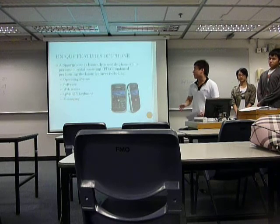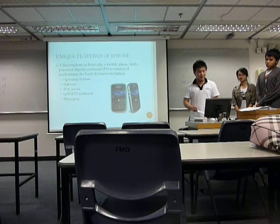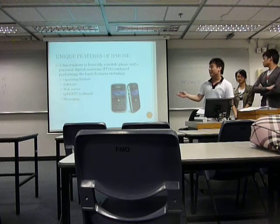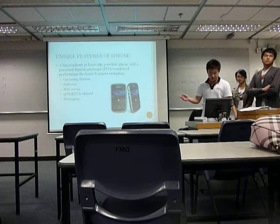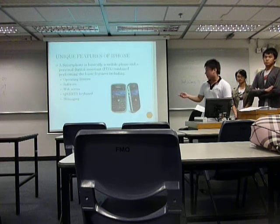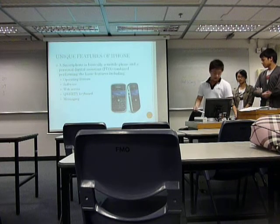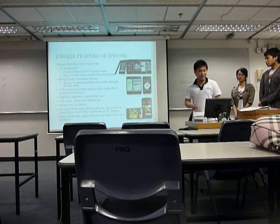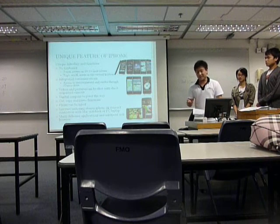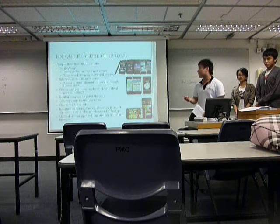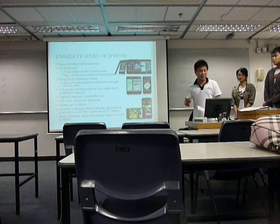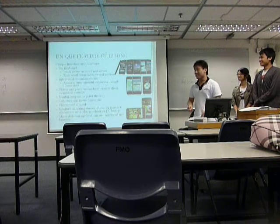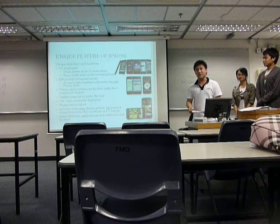Now I'm going to talk about smartphones and what actually makes a smartphone — specifically the iPhone. These are some of the basic criteria: it has an operating system, software, web access, and QWERTY keyboard messaging. The iPhone doesn't have a physical QWERTY keyboard, but it uses a very unique interface — a keyboardless touchscreen which uses touch to input commands. You can type, scroll, and zoom using your fingers. It's very user-friendly and easy to learn.